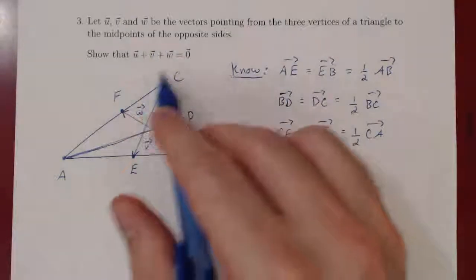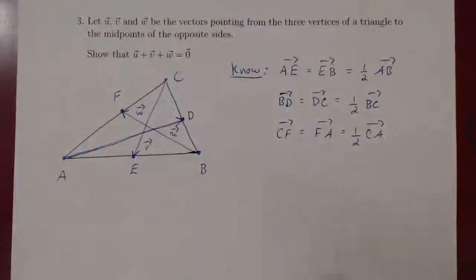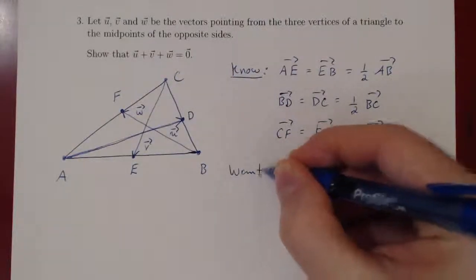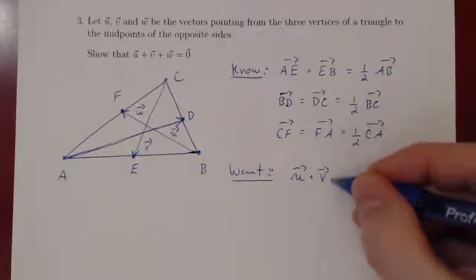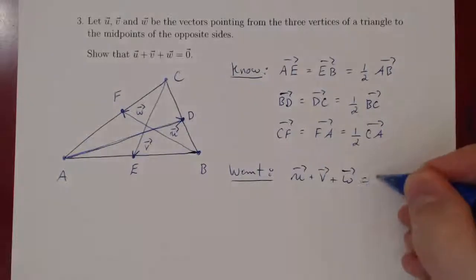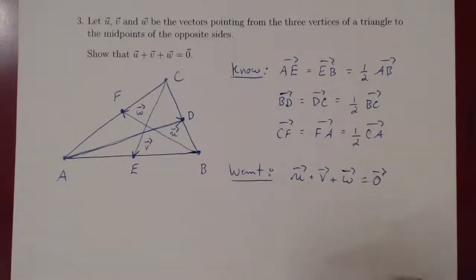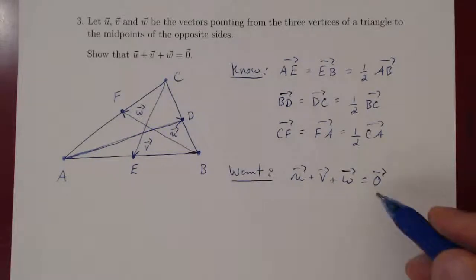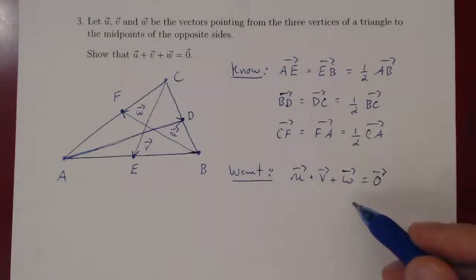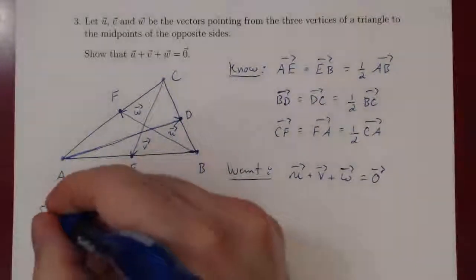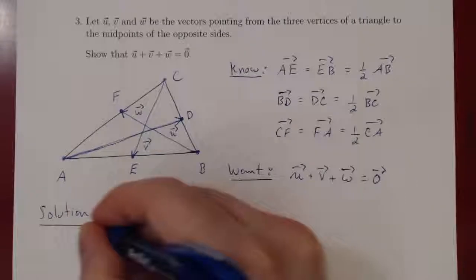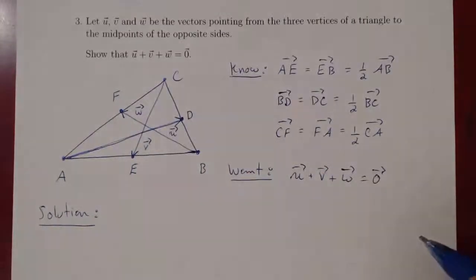Well, we want to show that the sum of the vectors U plus V plus W is indeed the zero vector. Well, as always we have an equality between two vectors. We start from one side and get the other. It's more natural to take this sum and simplify to the zero vector than take the zero vector and expand it somehow to this sum. So we'll start with this sum. And this will be the beginning of our solution. U plus V plus W.